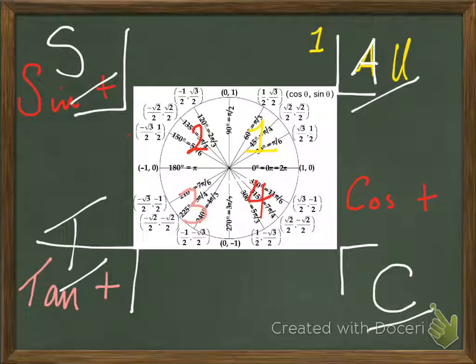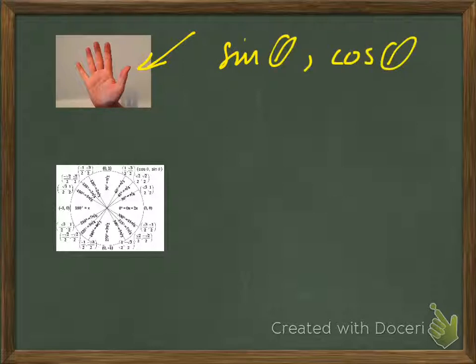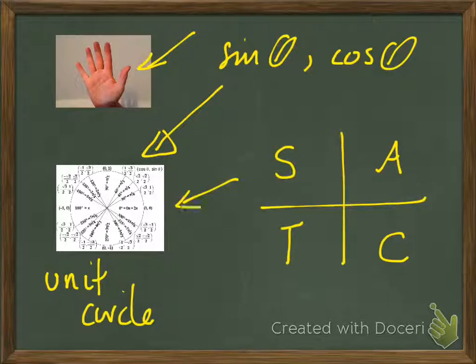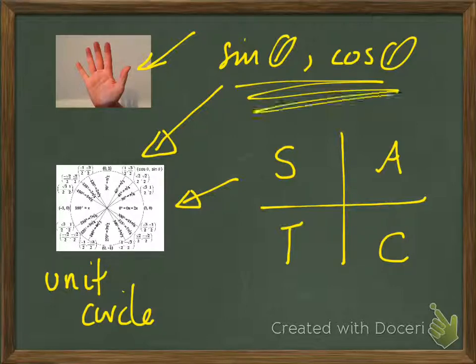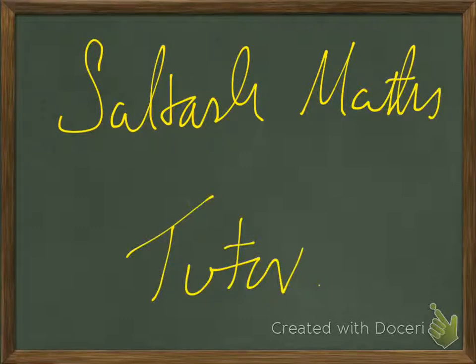So to round up: we've found an easy way of working out the sine and cosine of any angle using your hand, related that to generating the unit circle, and introduced the concept of CAST — which you can overlay onto the circle — plus a bit of tangent as well. The hand technique is your everyday tool; the deeper bits are for when you get heavily into trigonometry at GCSE and A level. Thanks very much for listening — this has been Saltash Maths Tutor. If there's anything I can do to help, make a comment, like it, follow it. I hope it's been of some use.